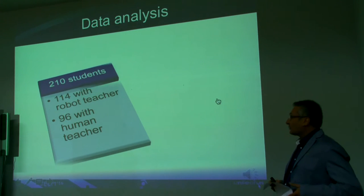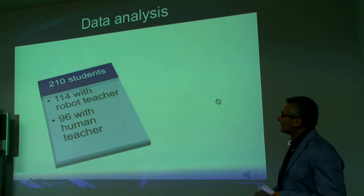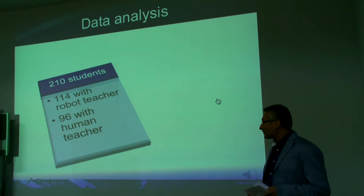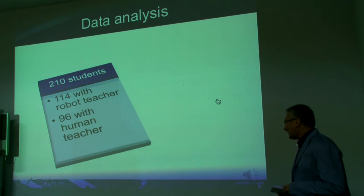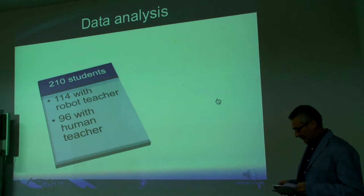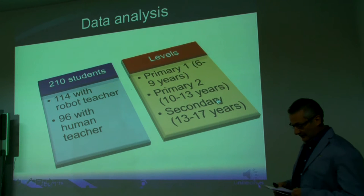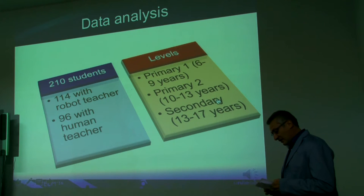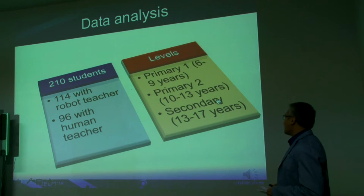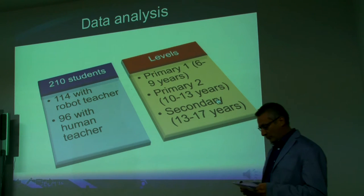The total number of students that participated in the experiment was 210. 114 had a robot teacher and 96 remained with a human teacher. The students' age range was from 6 to 17. Experiment results had been analyzed as a whole and also by groups. Groups divisions were made according to the Spanish Educational Law in three groups.